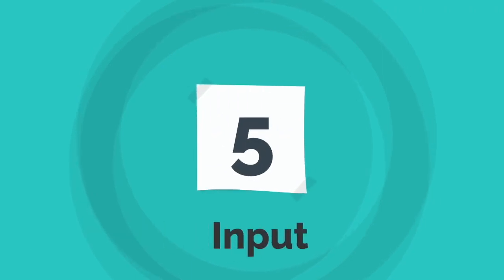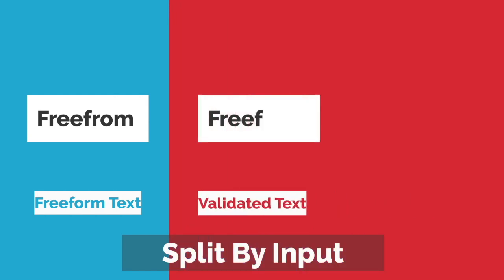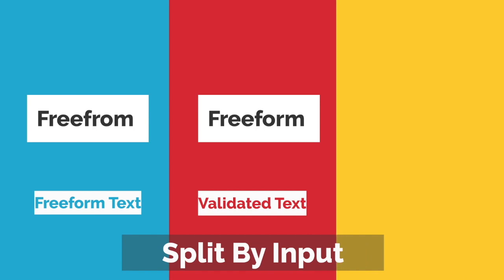Tip five is Input — looking at all the different ways we can gather input from our users. This might start with a really simple freeform text field with no validation, just getting something into our system so we can start using that data. That will probably evolve to adding validation, filtering, and integrating a third-party data feed. But the complexity of adding that from the start could delay our ability to get any value straight away, so think about the easiest way of gathering input first.